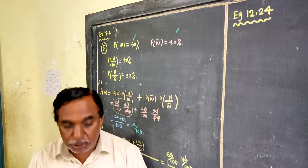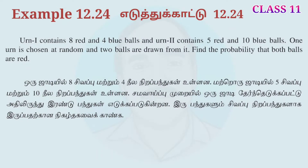Let's look at example 12.24. A1 contains 8 red and 4 blue balls, and A2 contains 5 red and 10 blue balls. One urn is chosen at random and 2 balls are drawn from the urn. Find the probability that both balls are red.